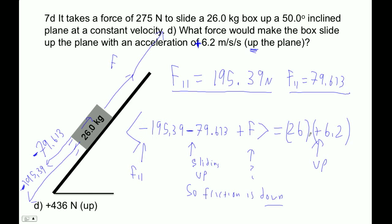Okay, so now we just have to solve for this. It's simply going to be 26 times 6.2, plus that 195.39, so I stored that in A, and then plus that 79.613, which I've stored in C. So that's 436.2, positive. Yay.